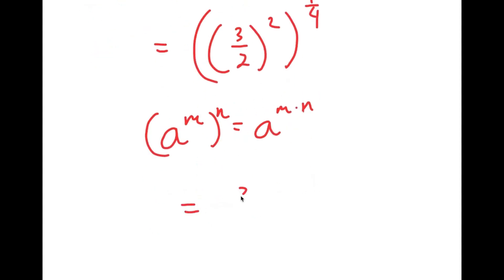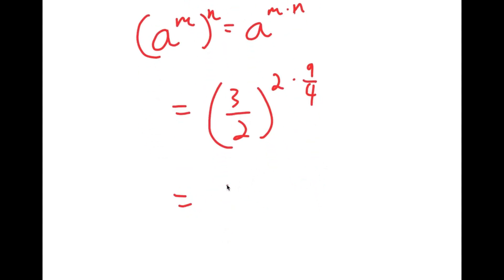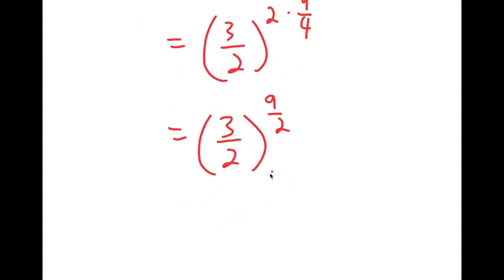So this is going to equal 3 over 2 to the power of 2 times 9 over 4, which is equal to 3 over 2 to the power of 18 over 4, which simplifies to 9 over 2. So I have 3 over 2 to the power of 9 over 2.